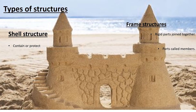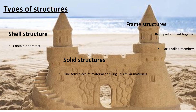The last type is a solid structure. A solid structure is usually made from one solid piece of material, but it can also be made by piling up or forming similar materials into a particular shape or design. Solid structures are not hollow and do not contain any joints. Because they are solid, they are usually strong and can support relatively heavy loads. Examples include sand castles and bricks.